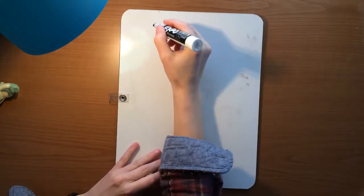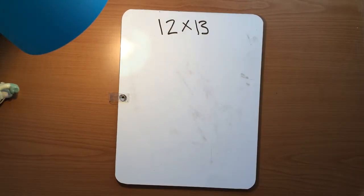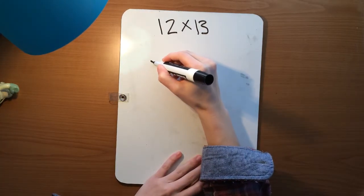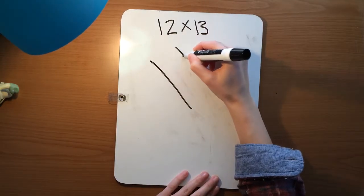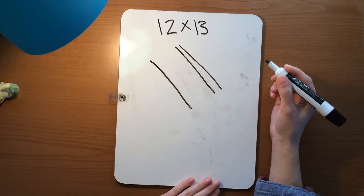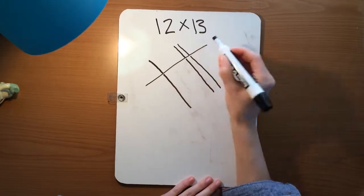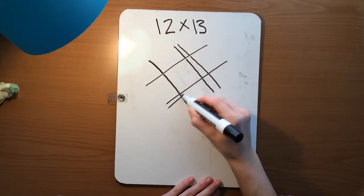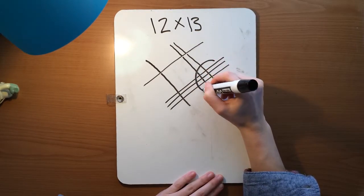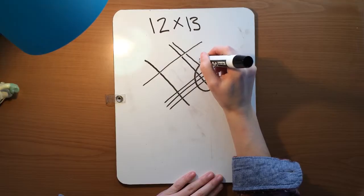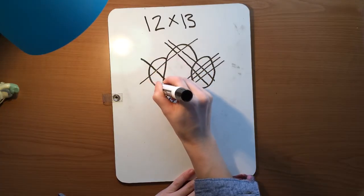So our first problem we'll do is 12 times 13. We'll go ahead and draw a diagonal line here, which will represent the 1 in the tens place in the 12, and two more up here for the 2 in the ones place. For the 13, we'll come across one line for the 1 in the tens place, and down here, three lines for the 3 in the ones place. We'll circle these intersections in the lines right here, these intersections in the middle will go together, and then this last intersection of lines will go together.